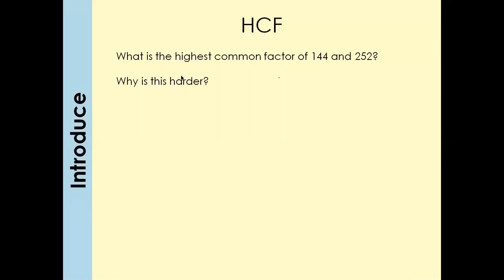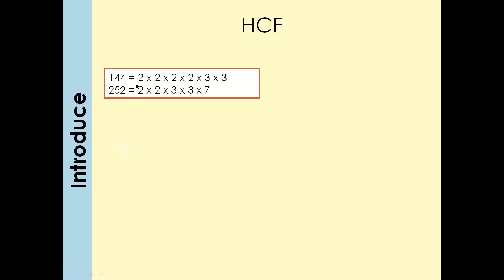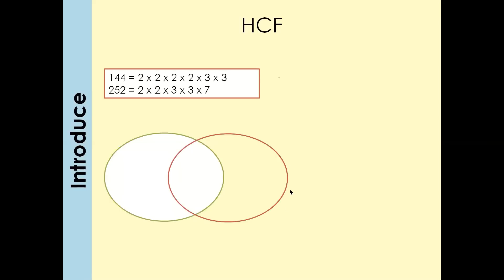So what we have to do if the numbers are bigger: first, draw the factor tree diagram and write the prime factors. After this, you have to draw a Venn diagram — that is what they're going to ask you in the exam. For example, find the HCF of 144 and 252 using a Venn diagram. Draw two circles: one for 144 and one for 252.